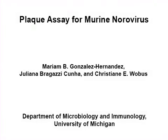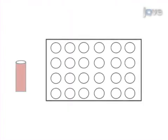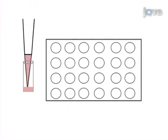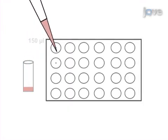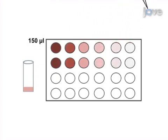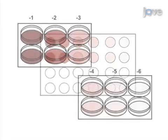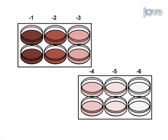The overall goal of this procedure is to quantify infectious murine norovirus particles. This is accomplished by first preparing tenfold dilutions of virus inoculum. The second step is to transfer dilutions of virus inoculum to a RAW 264.7 monolayer and incubate plates rocking at room temperature for one hour.